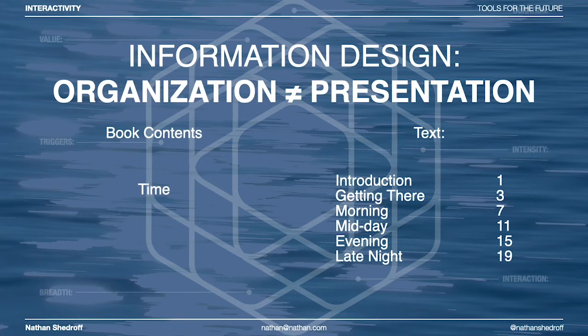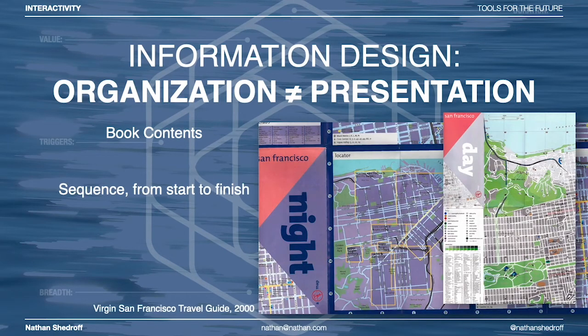There are other ways of organizing city travel guide information as well. One is by time — organizing all information by time of day: what happens in the morning, midday, evening, late at night, etc. Here the organization is by time, but the presentation is by text. And here's an example where the organization is still by time from start to finish of the day, but the presentation is a map — the Verson travel guides for San Francisco actually have two different maps: things you'd do during the day on the day map, and things you'd experience at night on the night map.